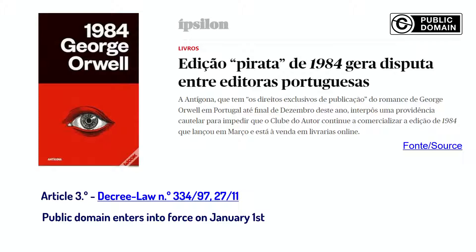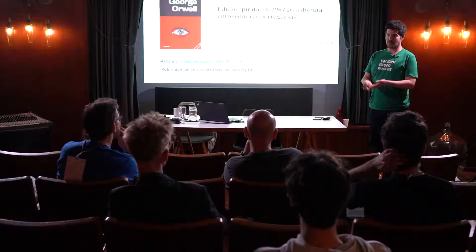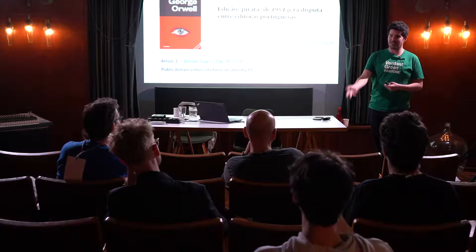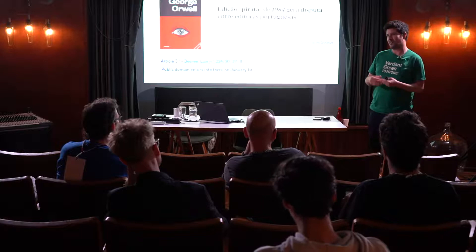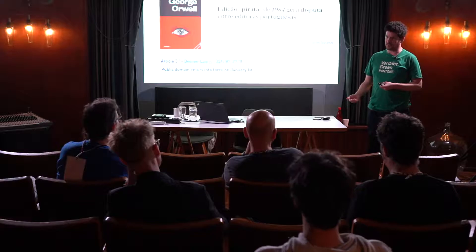Another curious point about public domain: works enter it after 70 years, but you cannot start counting from the exact day the author died 70 years ago — you need to wait until January 1st of the following year. In 2021, George Orwell entered the public domain; a publisher started a new edition but was violating copyright because they didn't wait for January 1st — the public domain World Day. In Portugal, the national library with Wikimedia Portugal publishes lists of Portuguese authors entering public domain.